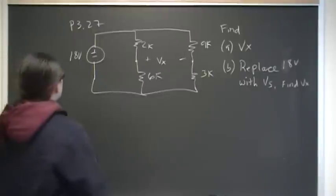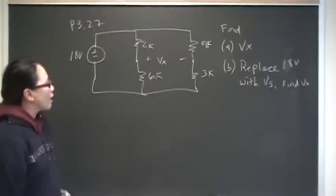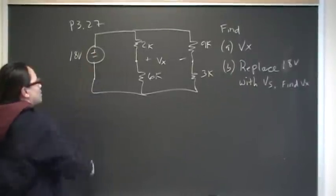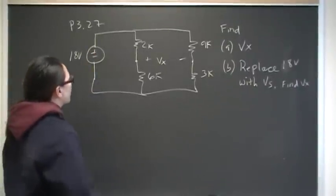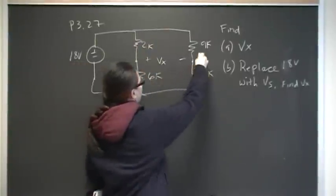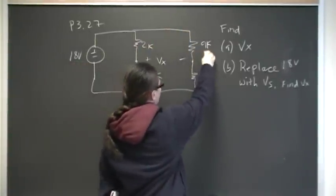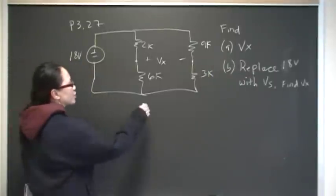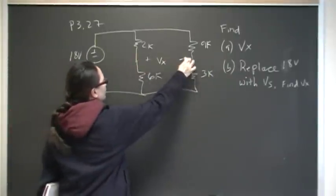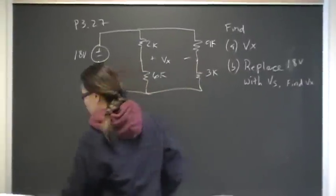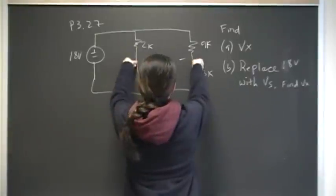Hey you guys, so this is problem 27 on chapter 3 and in this problem we have an 18 volt independent voltage supply connected in parallel with a 2K and a 6K and another parallel branch with a 9K in series with a 3K. In part A we want to find VX which is this voltage, so if you put your ohm meter from here to here and stick the two probes here, what would you read?